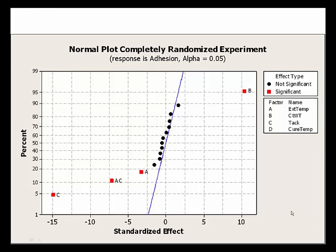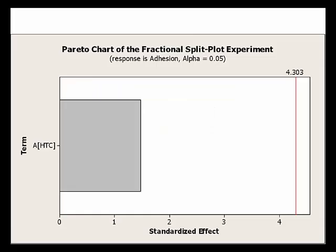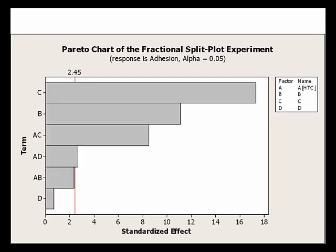The normal plot also incorrectly indicates that A, extruder temperature, is significant. This example really demonstrates the impact of restricted randomization on our learning. In this real-life example, I stripped out the proper 16 values and analyzed the design as the half fraction. From the hard to change Pareto chart, term A is not significant. From the easy to change Pareto chart, terms C, B, and AC were still judged significant. However, we picked up one additional interaction term — extruder temperature and cure temperature — due to the confounding of two-factor interactions at resolution 4.